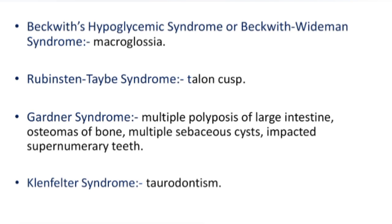Beckwith-Wiedemann syndrome — also called Beckwith hypoglycemic syndrome: related to macroglossia. Rubinstein-Taybi syndrome: related to talon cusp. Gardner syndrome: multiple polyposis of the large intestine, osteomas of bone, multiple sebaceous cysts, and impacted supernumerary teeth. Klinefelter syndrome: related to taurodontism.